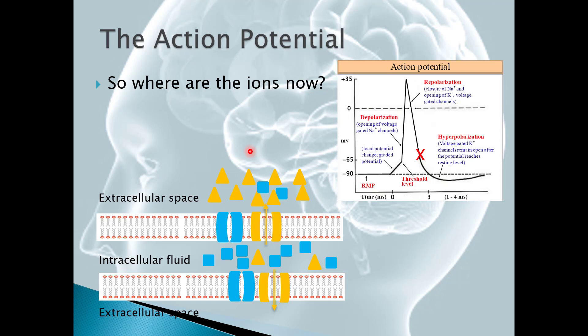So where are the ions now? If we look here at this diagram, we see we have more sodium ions inside and more potassium ions outside. So we have a higher concentration of sodium now inside in the intracellular fluid and a higher concentration of potassium outside in the extracellular space. And that's when we're here at this time point X. And again, this is important for those different activities that you're going to do.